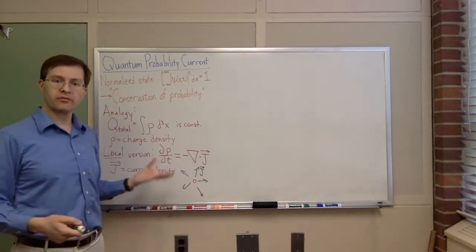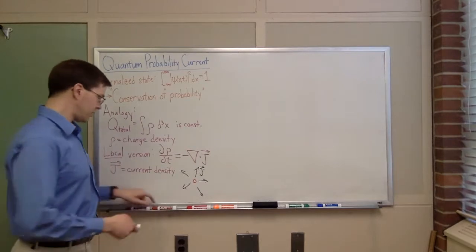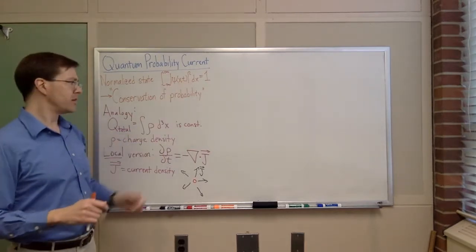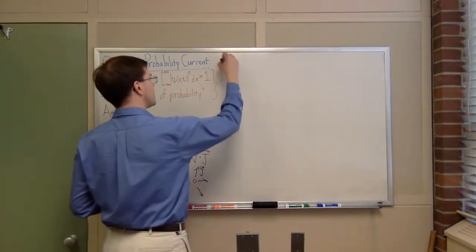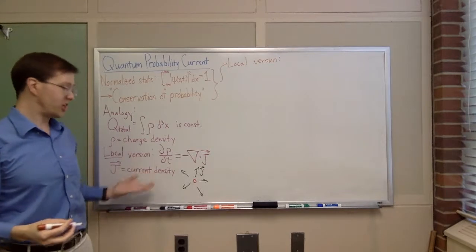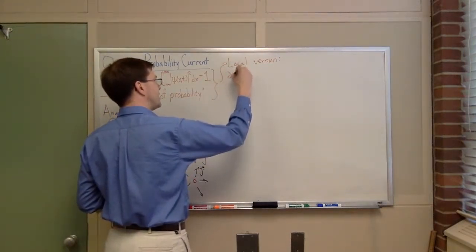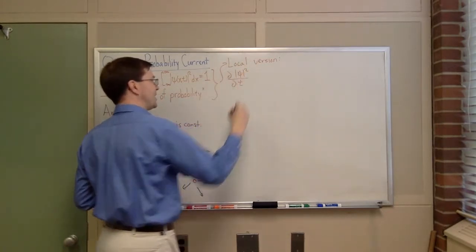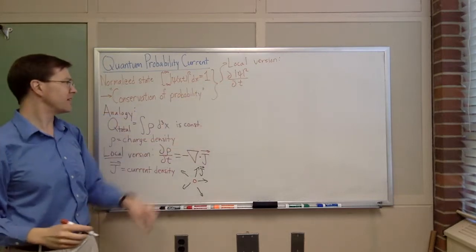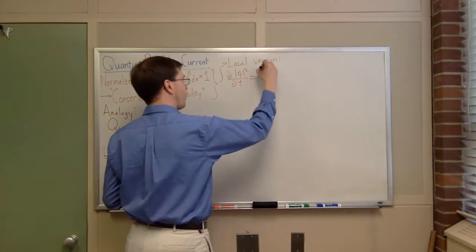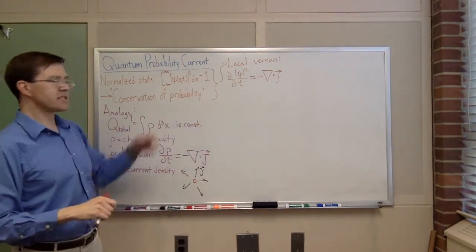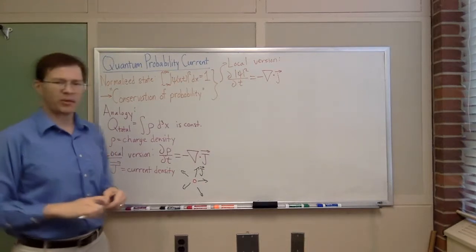This is the local version of charge conservation. So what I want to do is define something similar for probability. The probability density is psi squared, so if I want the local version, I want to write down something about the probability density changing with time: d|psi|²/dt. That's the rate of change of the probability at a given point, and that has to be equal to the divergence of some vector j, where j is the quantum probability current.